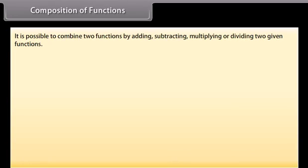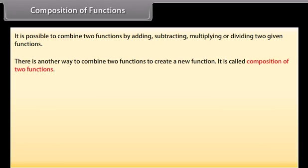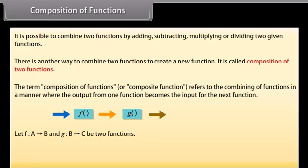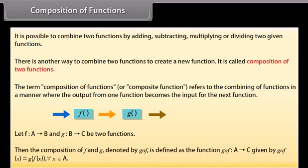Composition of functions. It is possible to combine two functions by adding, subtracting, multiplying, or dividing two given functions. There is another way to combine two functions to create a new function, called composition of two functions. The term composition of functions or composite function refers to combining functions in a manner where the output from one function becomes the input for the next function. Let function f from A to B and function g from B to C be two functions. Then the composition of f and g, denoted by g∘f, is defined as the function g∘f from A to C given by g∘f(x) = g(f(x)) for each x belonging to A.